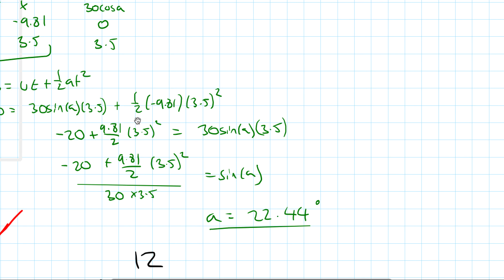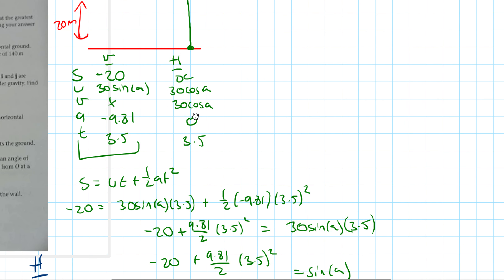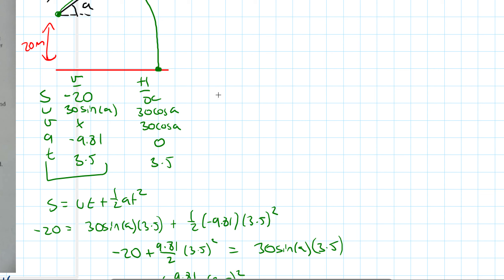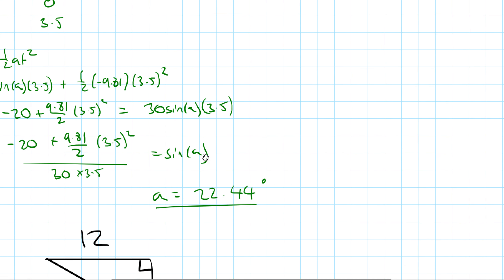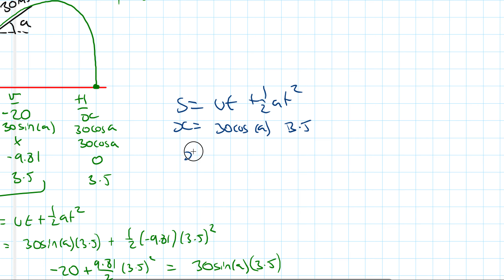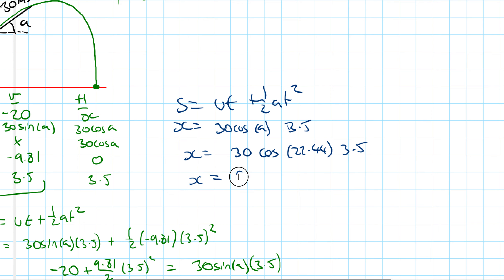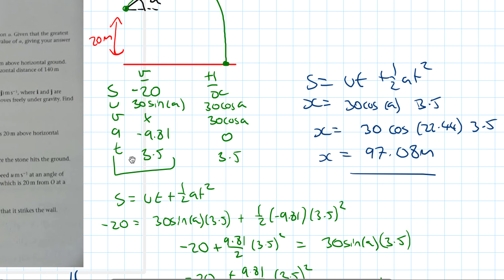For part B, finding the horizontal distance: x = 30 cos A × 3.5 = 30 cos(22.44°) × 3.5. Plugging into the calculator: x = 97.08 metres. That is the final answer for question 10.